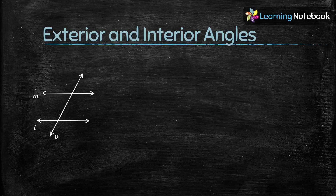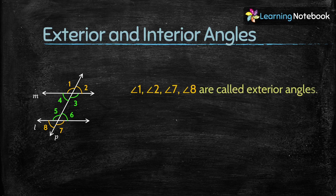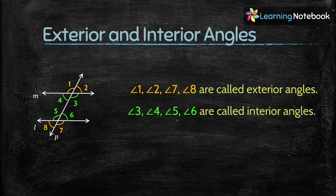A transversal when it intersects two parallel lines makes eight angles. Out of these eight angles, the four angles on the exterior side — that is angle 1, angle 2, angle 7, and angle 8 — are called exterior angles. The angles which lie on the interior side — angle 3, angle 4, angle 5, and angle 6 — are called interior angles.